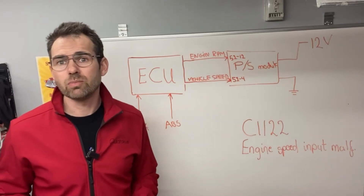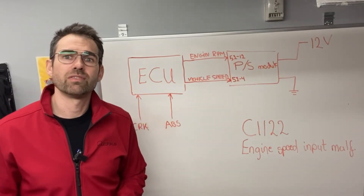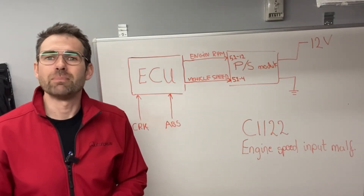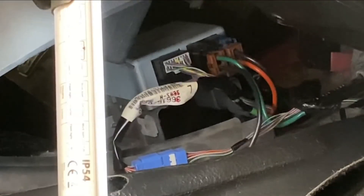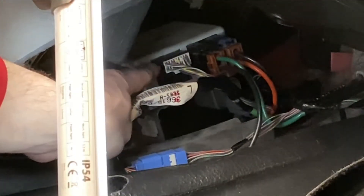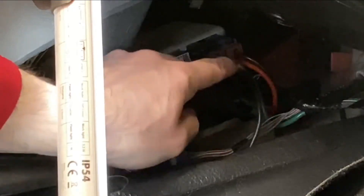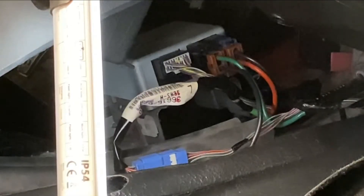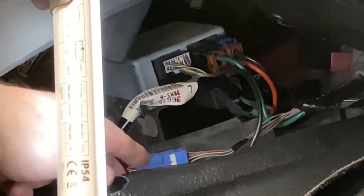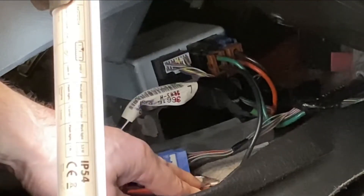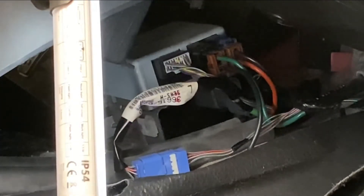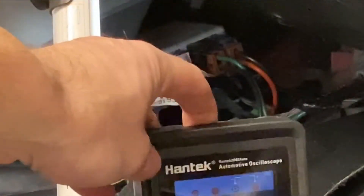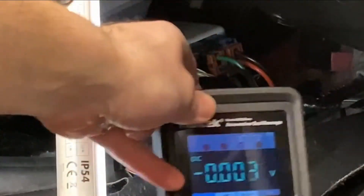I'm going to use my oscilloscope for this because it's perfect for these kinds of matters. Right here we have the power steering control unit. The green wire and the black wire are the supply voltage and the ground. The ground is actually connected right through a bolt here to the chassis. So it's pretty easy to see. Let's see what it looks like.